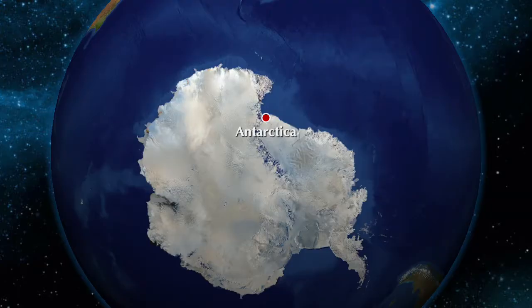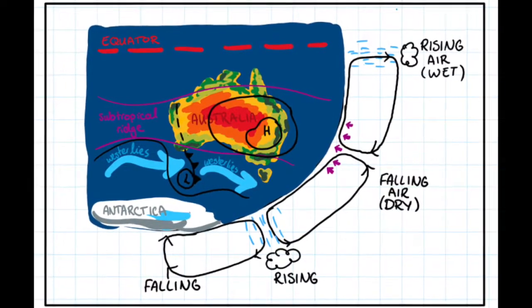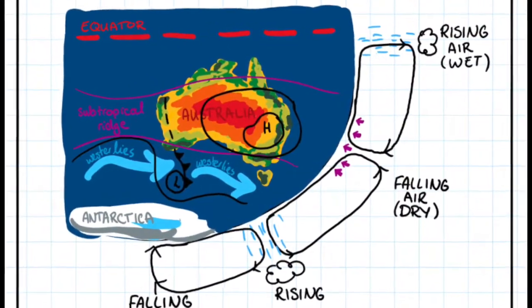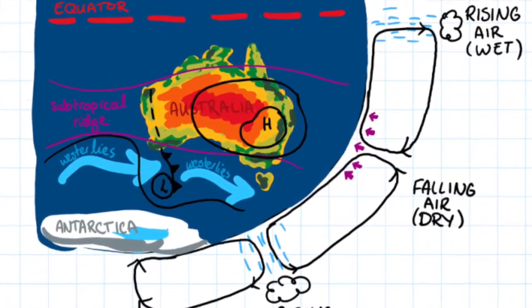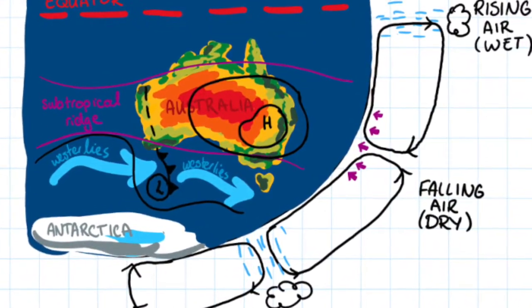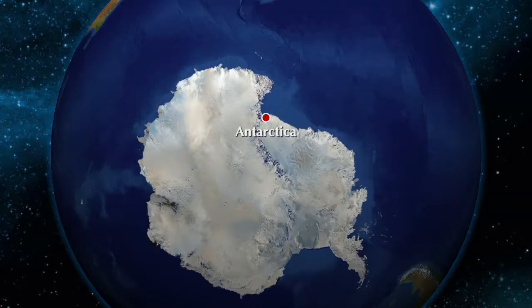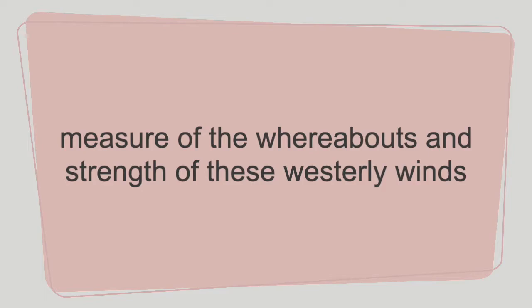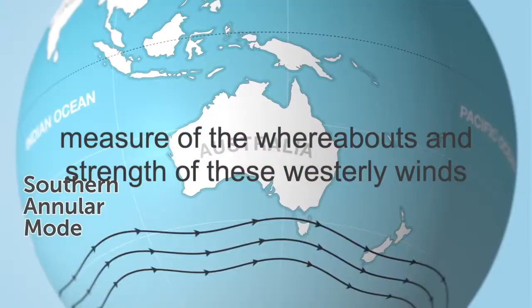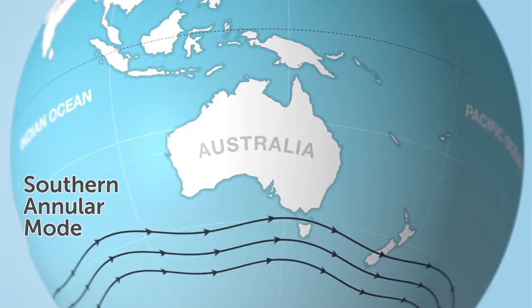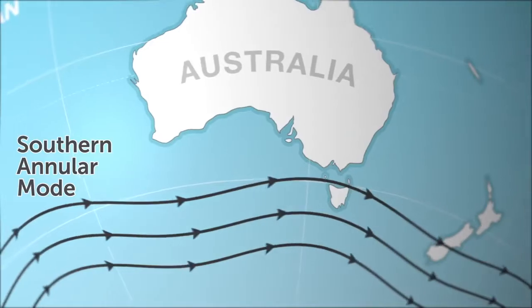The SAM influences climatic conditions across the Southern Hemisphere, particularly in Antarctica. The temperature gradient between the mid-latitudes, near the equator, and the poles drives the Southern westerly winds, which you can think of as a ring or belt of air circulating almost continuously around the Antarctic continent. The SAM is a measure of the whereabouts and strength of these westerly winds as they move north or south in response to changes in air pressure distribution.